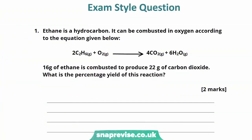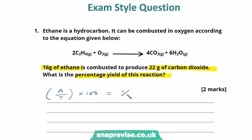Ethane is a hydrocarbon. It can be combusted in oxygen according to the equation given below. 16 grams of ethane is combusted to produce 22 grams of carbon dioxide. What is the percentage yield of this reaction? The first thing we're going to do is write out our equation: actual yield divided by theoretical yield, times by 100, gives us the percentage yield.